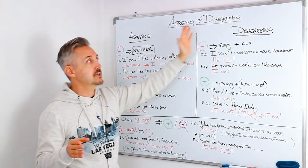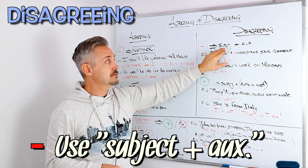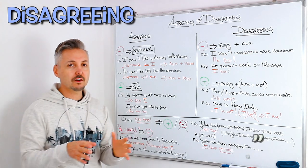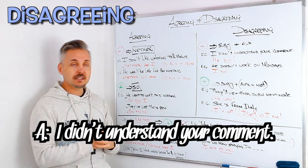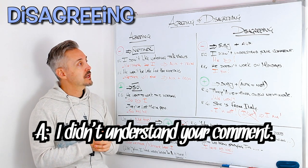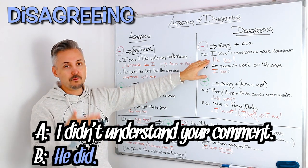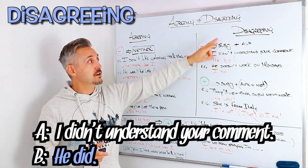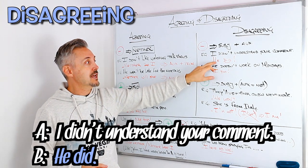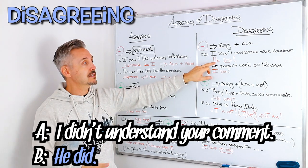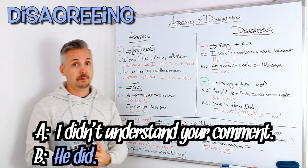Now let's look at disagreeing. If the statement is negative, you use subject or pronoun + the auxiliary in its positive form. For example: 'I didn't understand your comment.' The other person would say 'He did.' So you use the same auxiliary as the original statement — 'did' — but without the negative. 'He did' in the past.